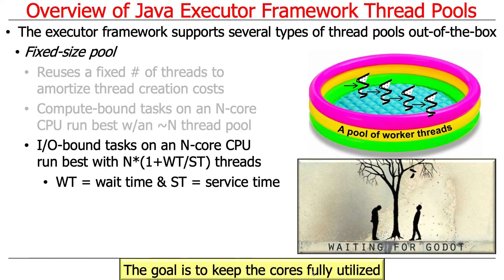I/O-bound tasks are more interesting and complicated, because they end up waiting. While they're waiting, if you don't have other threads ready to run, you're going to be underutilizing the CPU — another thread could be doing work on the core while the first thread is blocked waiting for I/O. So you want to ensure that while one thread is blocked reading or writing and suspended, another thread that's available can be run.